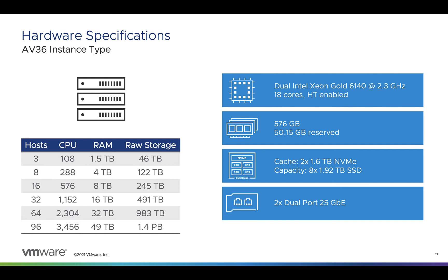With a max cluster size of 16, you can get all the way to 576 CPUs, 8 TB of RAM, and 245 TB of raw storage capacity. And with 96 hosts per private cloud, you can see just how scalable this can be — all the way up to 3,456 CPUs, 49 TB of RAM, and 1.4 PB of raw storage capacity.